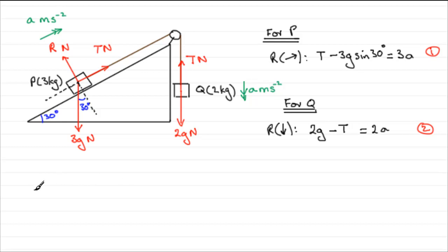So what I'm going to say then is we're going to add 1 and 2. So 1 plus 2 gives. What does it give us? Okay well as I say T and minus T cancel out.